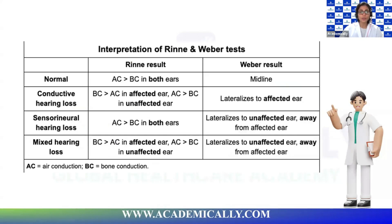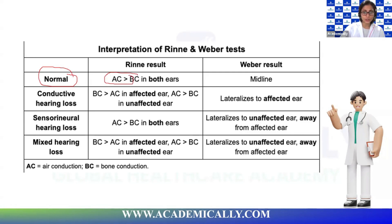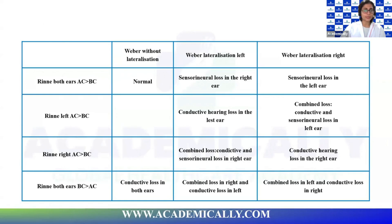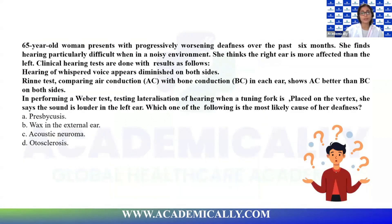Here are a few charts to help interpret test results. In a normal ear, air conduction is greater than bone conduction in both ears, and Weber should be in the midline. The charts also show what happens with conductive hearing loss, sensorineural hearing loss, and mixed hearing loss. I'll also detail a mnemonic method that can help you figure out the answer in a few seconds — but these charts will definitely help too. We'll do a few questions first.